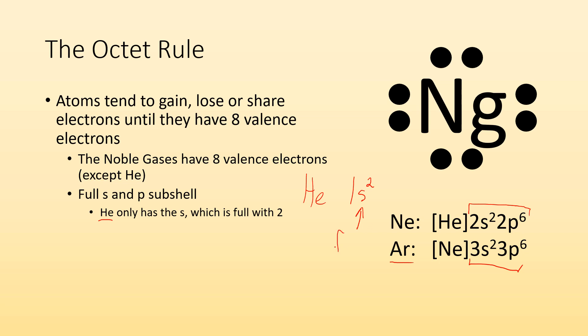In that example, the S is full, which is why noble gases tend to be so unreactive. This state is really stable because the S and the P are full. It doesn't want to gain anymore, it doesn't want to lose anymore. It's got the full S and P.